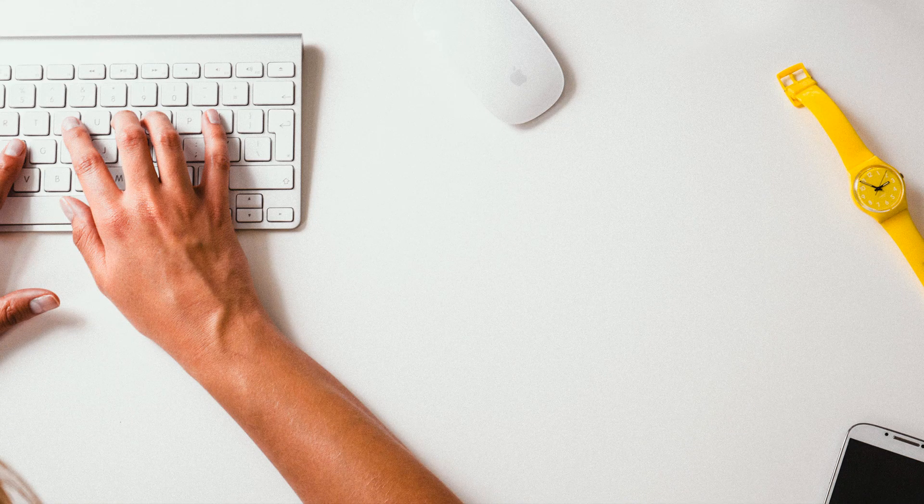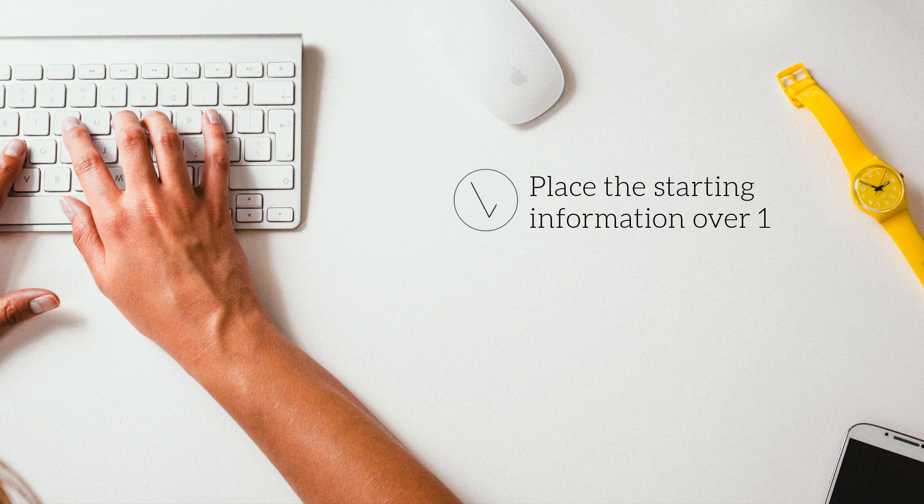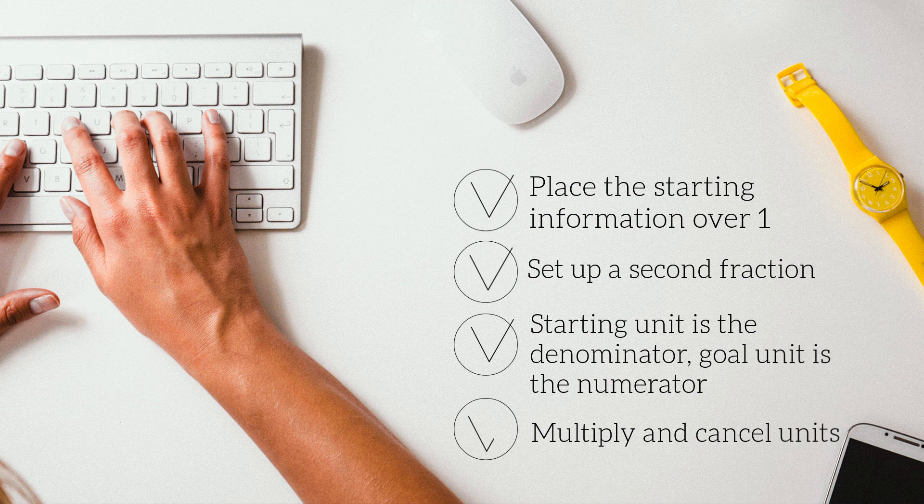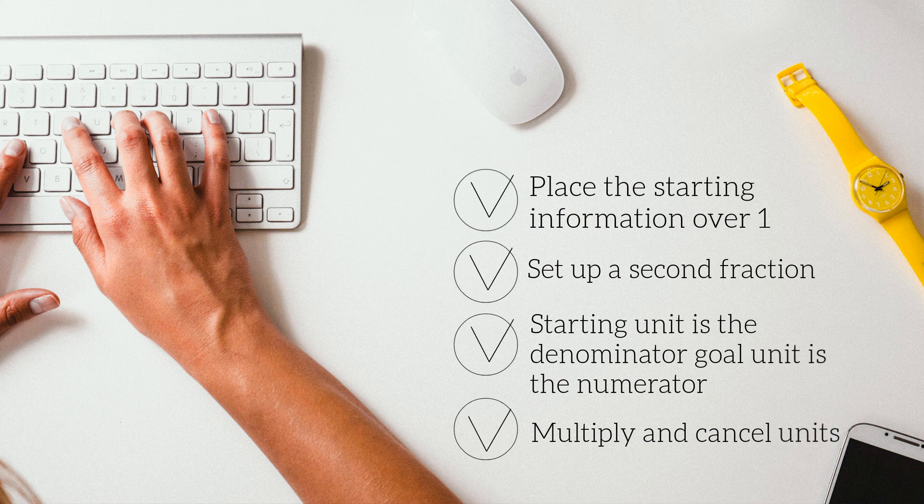Place the starting information over 1. Next, set up a second fraction with the unit that you want to convert to as the numerator and the starting information unit as the denominator of the fraction. Multiply these fractions and cancel units. So let's get started.